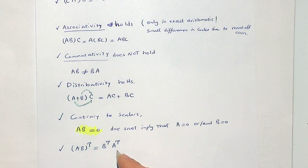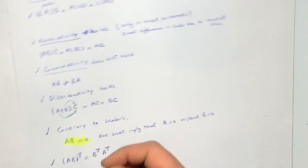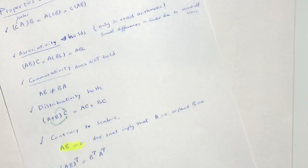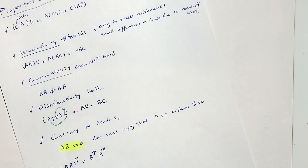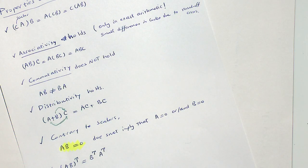There is also the transpose property: if we multiply A by B and then take the transpose, it equals B transposed multiplied by A transposed — the order is reversed. For example, if A is M by K and B is K by N, then A·B is M by N and its transpose is N by M. On the other side, B^T is N by K and A^T is K by M, so B^T · A^T is N by M, which is consistent. We will use this property later.